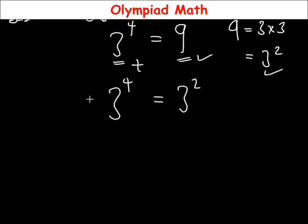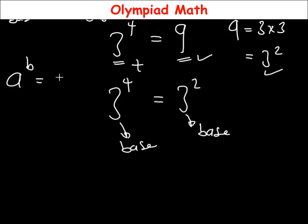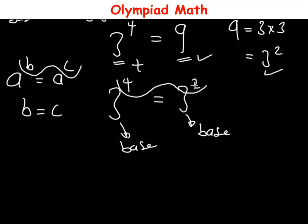Now the bases are equal — 3 on the left and 3 on the right. Applying the same principle: if a^b = a^c, then b = c. Since the bases are equal we simply compare the exponents, giving us 4 raised to power t is equal to 2.